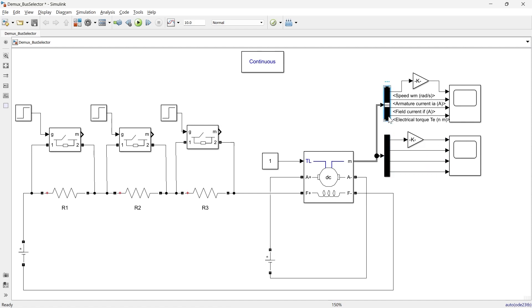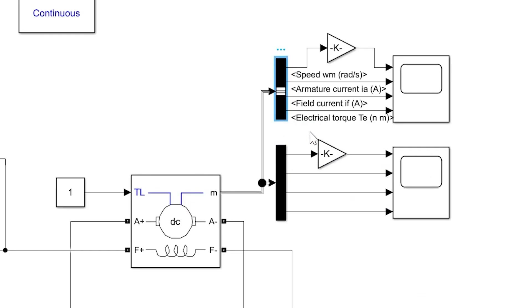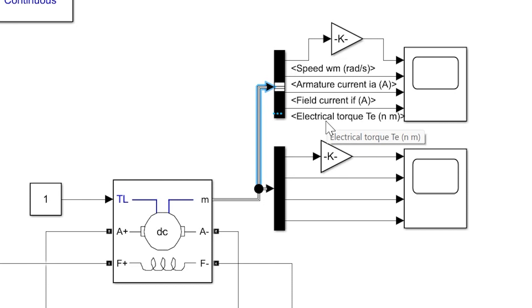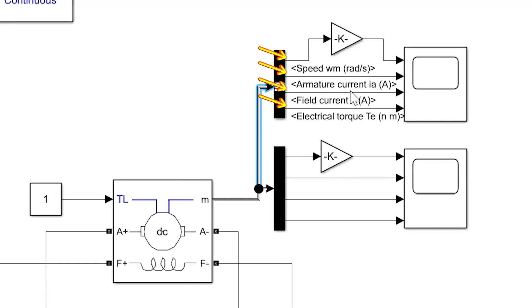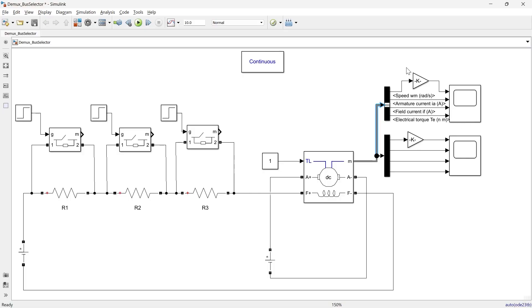The bus selector block is used to extract specific signals from the bus. It takes a bus signal or composite signal as input and allows you to select one or more signals from the bus using signal names or signal indexes. It provides multiple output ports, each port corresponding to the selected signal, and the number of output ports is determined by the number of selected signals.